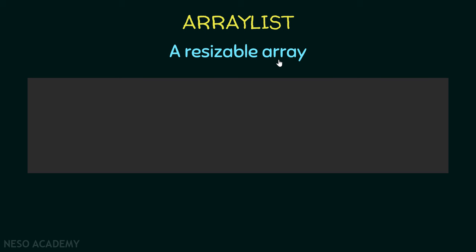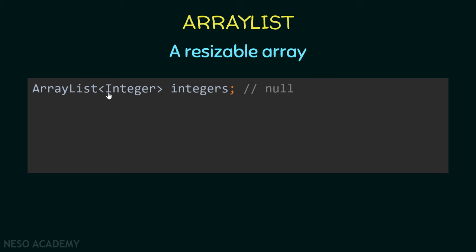We can use an ArrayList to store elements just like we store elements inside an array, and also an ArrayList is an object. To create an ArrayList, we use the ArrayList class followed by angle brackets, inside which we specify the type of elements we want to put inside this ArrayList.